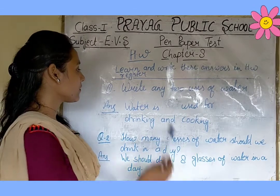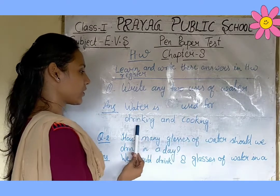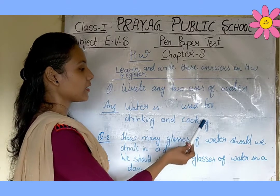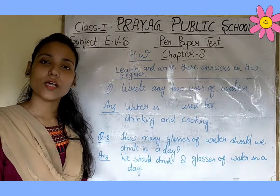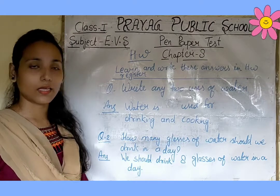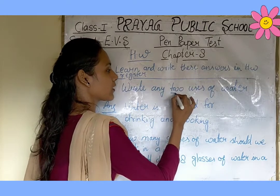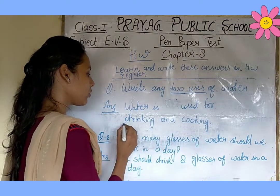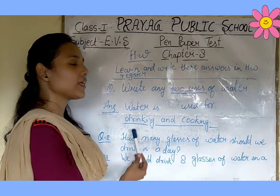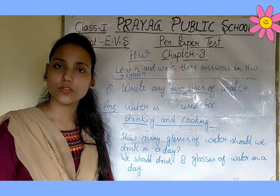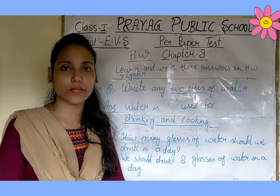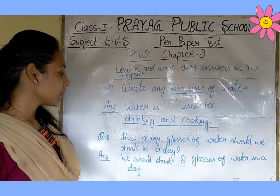Its answer is: water is used for drinking and cooking. Drinking यानी कि पीना और cooking यानी कि खाना पकाना। जल का प्रयोग पीने और खाना पकाने के लिए किया जाता है। यहाँ पर only two uses लिखे हैं, तो आप भी only two uses ही write करना — any two, like drinking, cooking, bathing, washing clothes, etc.